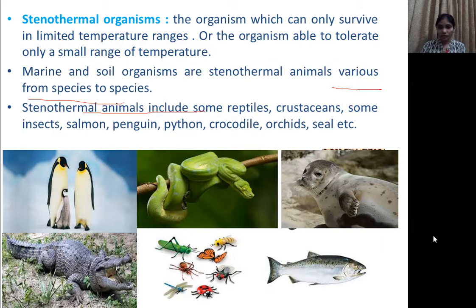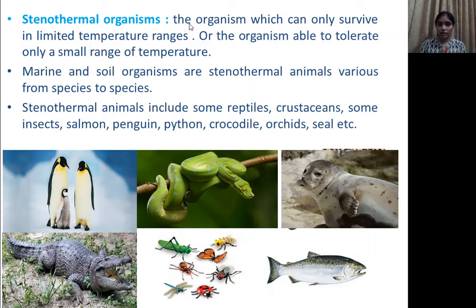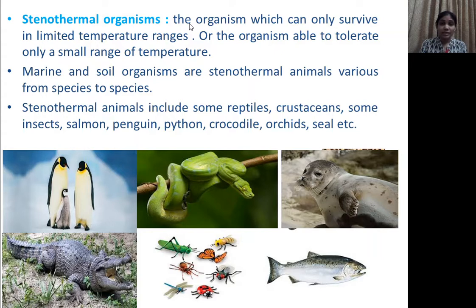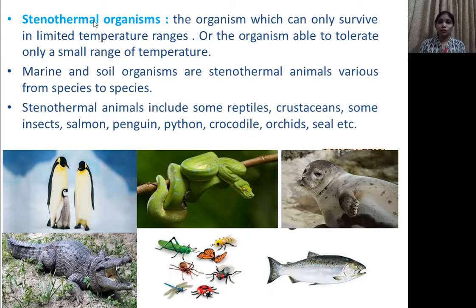The second type is stenothermal organisms — organisms that can only survive in a limited temperature range. If the temperature fluctuates even a little beyond that range, they can die. Most marine and soil organisms are stenothermal. Examples include some species of reptiles like snakes, pig, bean, crocodile, orchids, python, and some species of insects.